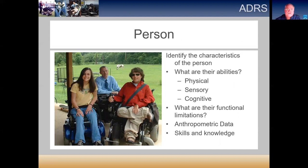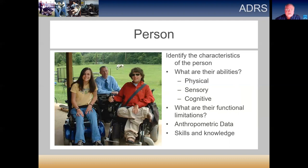When meeting with an individual to figure out their needs, we want to find the specific characteristics of the person — their physical, sensory, and cognitive abilities. For people with disabilities, we specifically want to know their functional limitations. We also gather anthropometric data, which is the measurement of human beings: how tall they are, how much they weigh, how far they can reach. Then we evaluate their skills and knowledge to make sure whatever intervention we use matches their current abilities or that they can be trained to use the equipment.